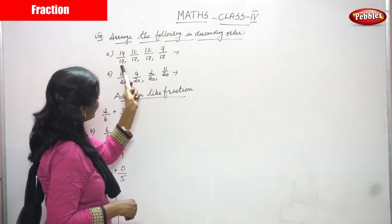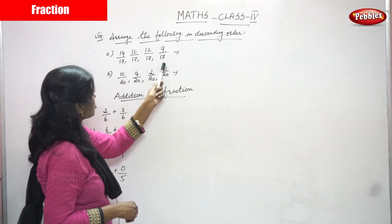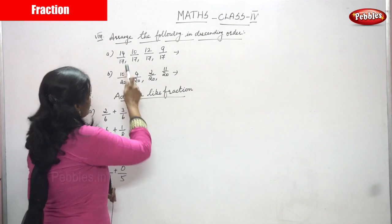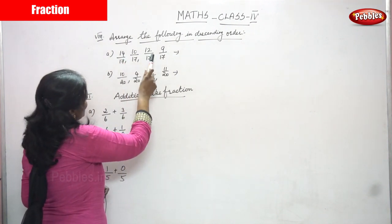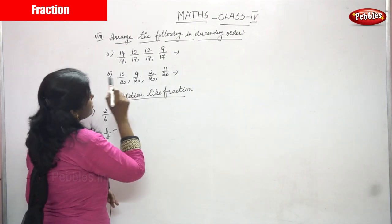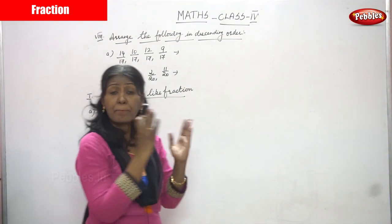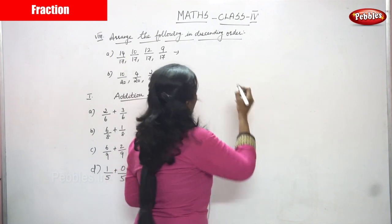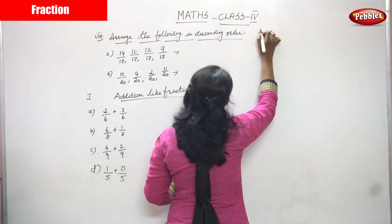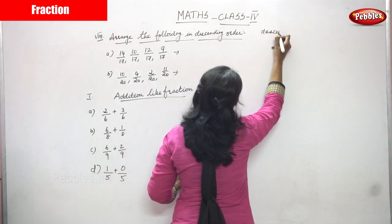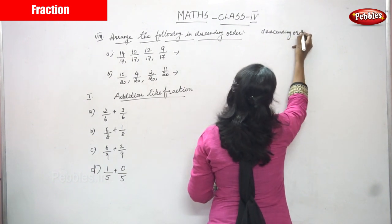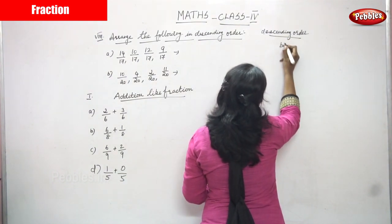Look at all the denominators. In this fraction, all the denominators are the same. So now we are going to look at the numerators. The numerators are different: 14, 10, 12, 9. We have to arrange them in descending order. Descending order means biggest to smallest.